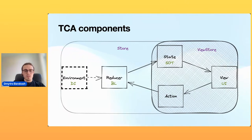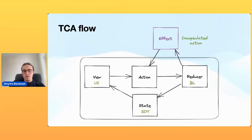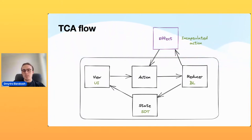TCA components: the main components in TCA are the Store, which contains at least some state and an action. The Store may present a part to the View, and this represented component has the name ViewStore. We also have a Reducer and an Environment — now called Dependency. This diagram shows only visibility of each component, not ownership. The TCA flow diagram shows unidirectional flow in action: a View generates actions which go to the Reducer — the business logic. The Reducer can either generate a new action later through an Effect, or mutate the state. Effects are an encapsulated scope of some action with logic. The Store runs the Reducer, and the Reducer transforms state — which is the source of truth.